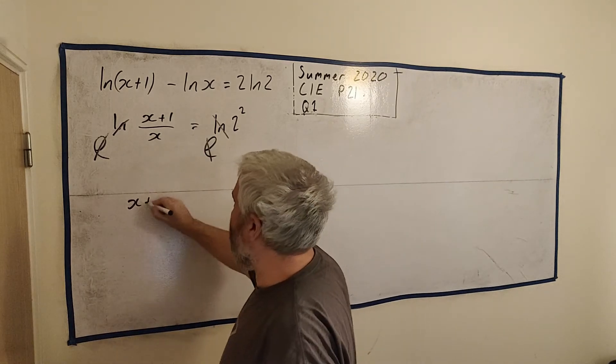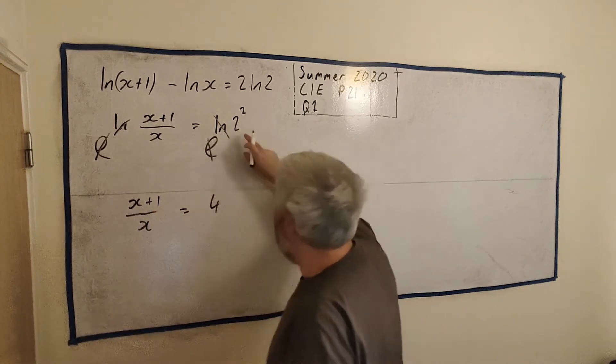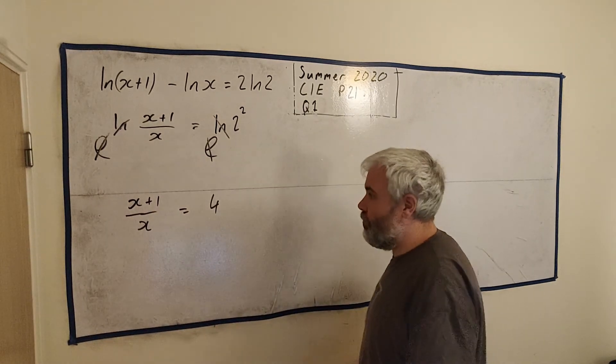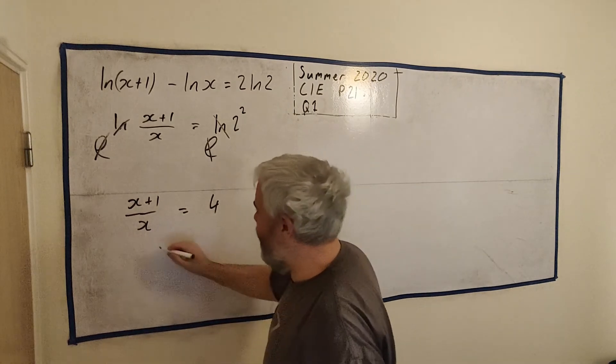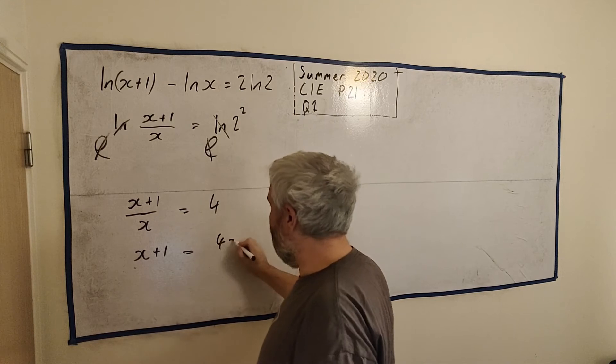So what are we left with? We're left with (x+1)/x equals 4, which is 2 to the power of 2. So let's just try and solve this. Multiply both sides by x. x+1 equals 4x.